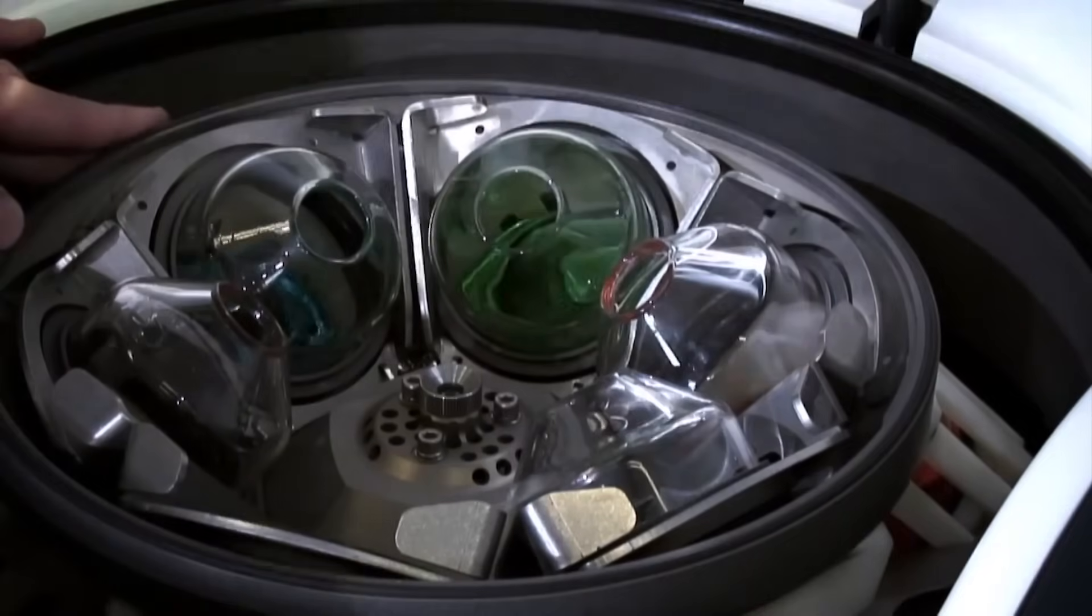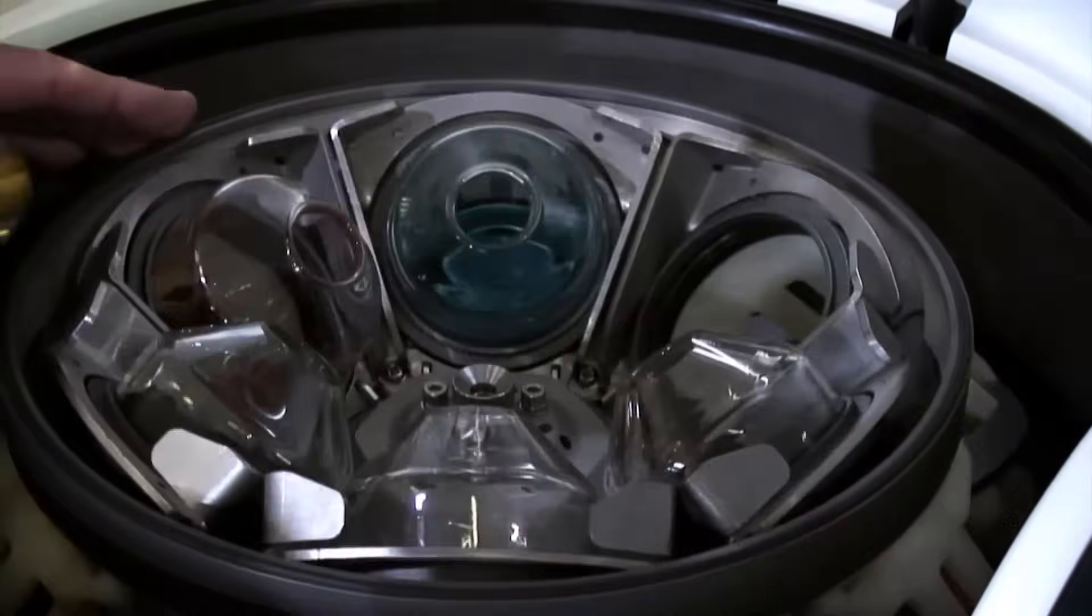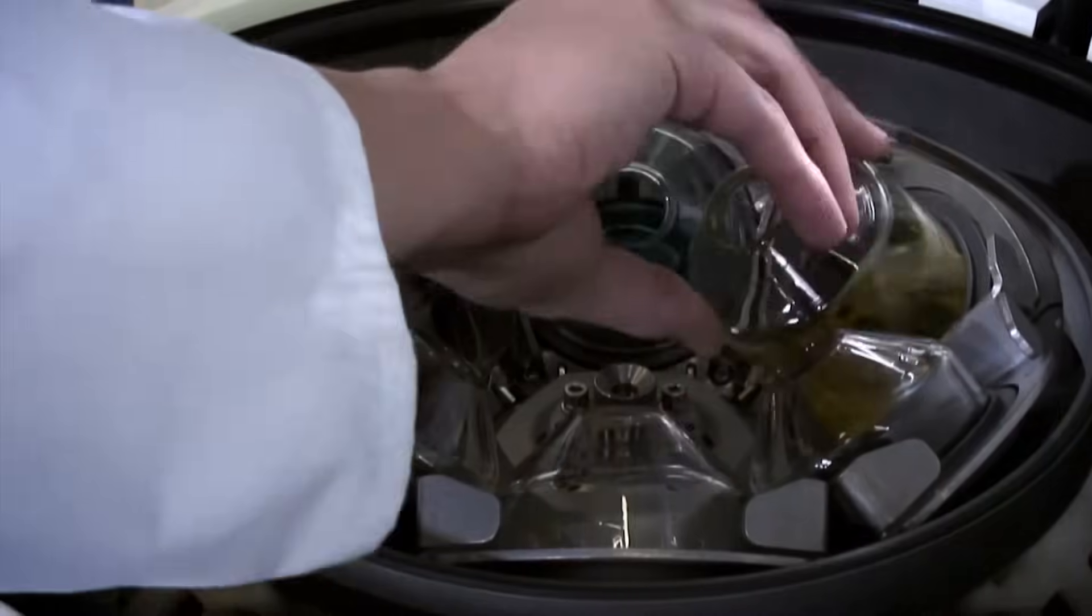When fitted with a removable six-position flask rotor, the Rocket Synergy will accept up to six flasks with a working volume of 400 milliliters, or up to 18 ASE tubes with options to optimize sample transfer.